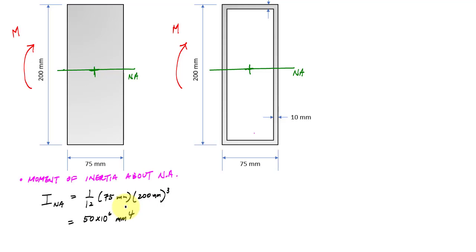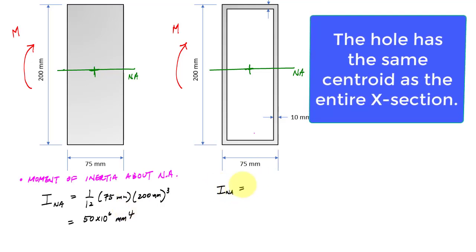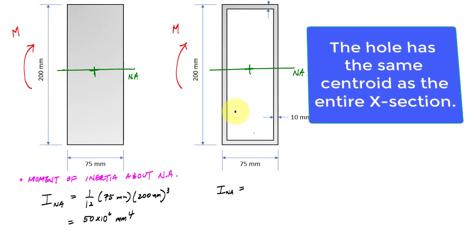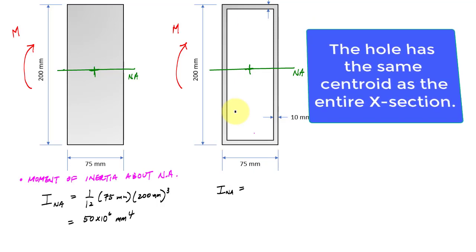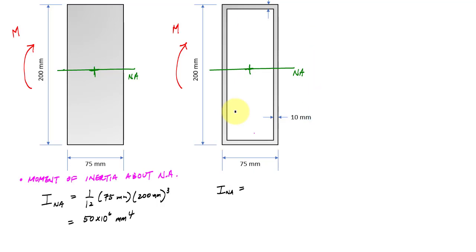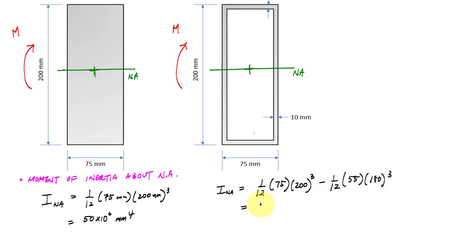For the hollow cross section on the right, I again have a symmetric cross section. The holes also share the same centroid, so I can take the outside minus the void. This would be the outside rectangle minus the moment of inertia of the hole, which is also a rectangle. This gives me 23.27 million millimeters to the fourth.